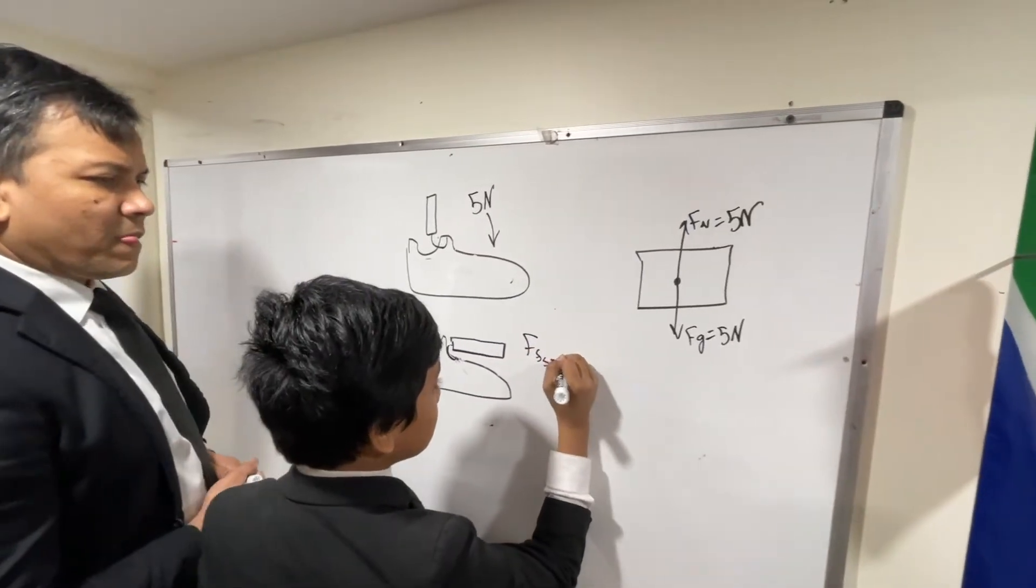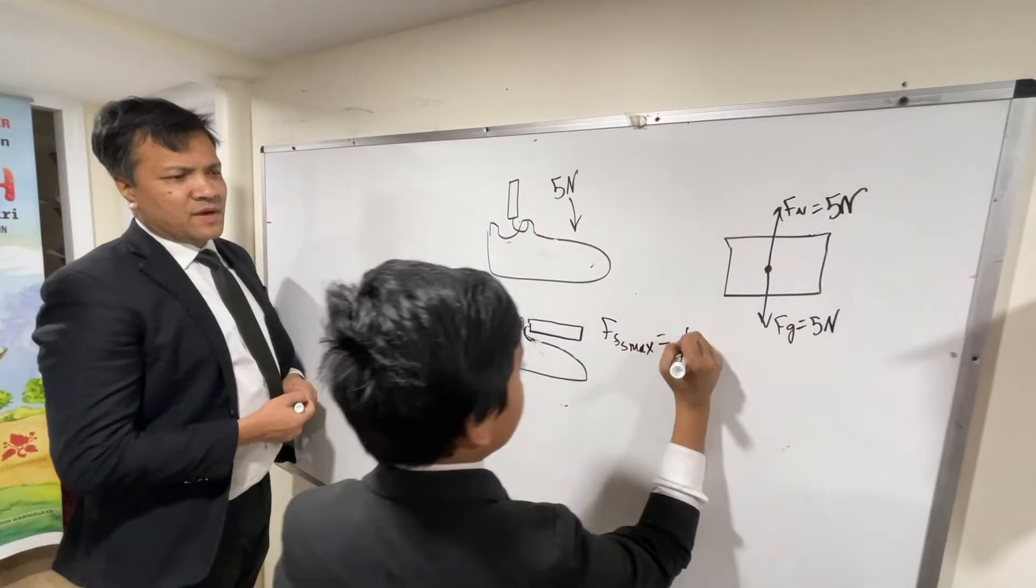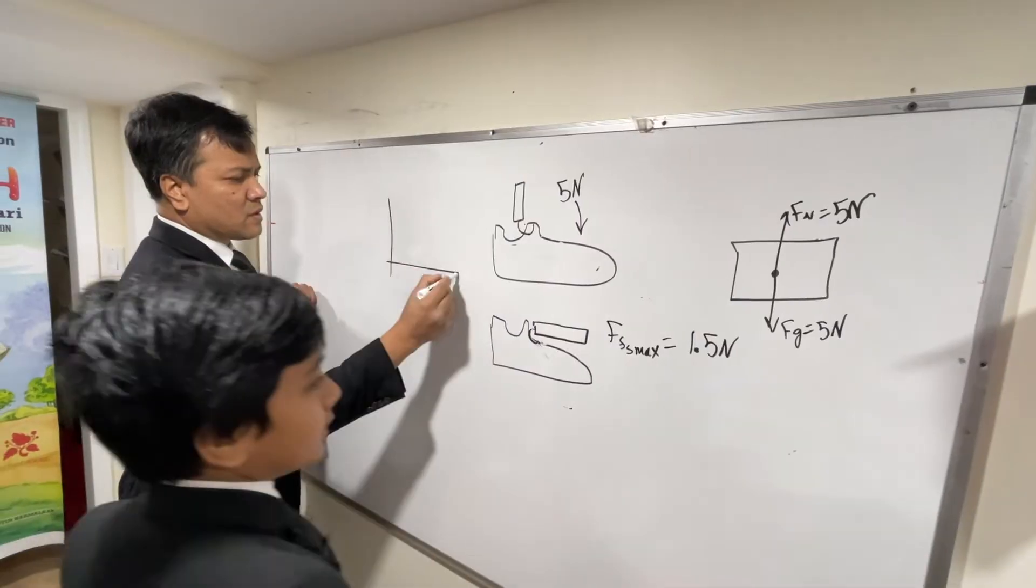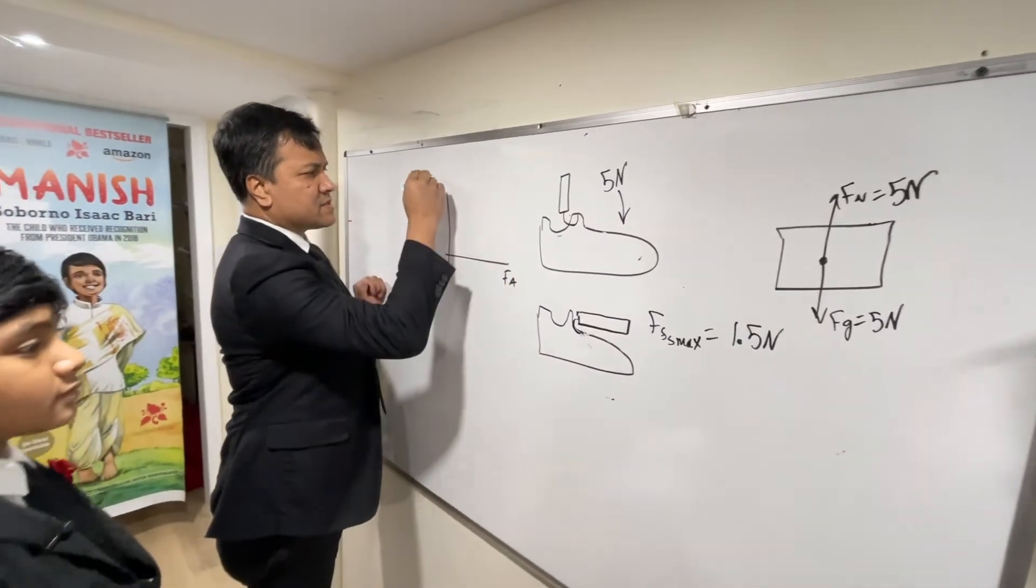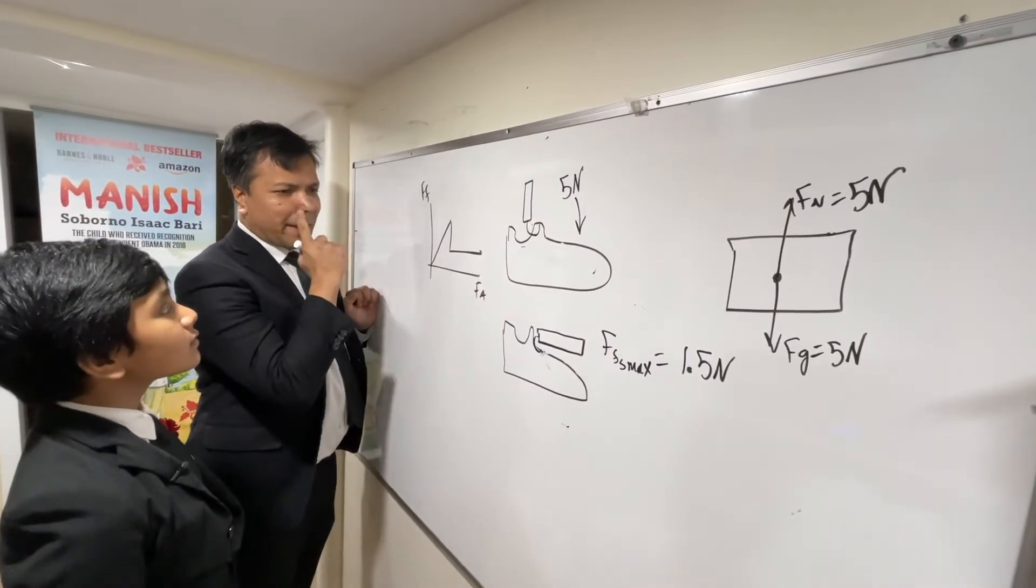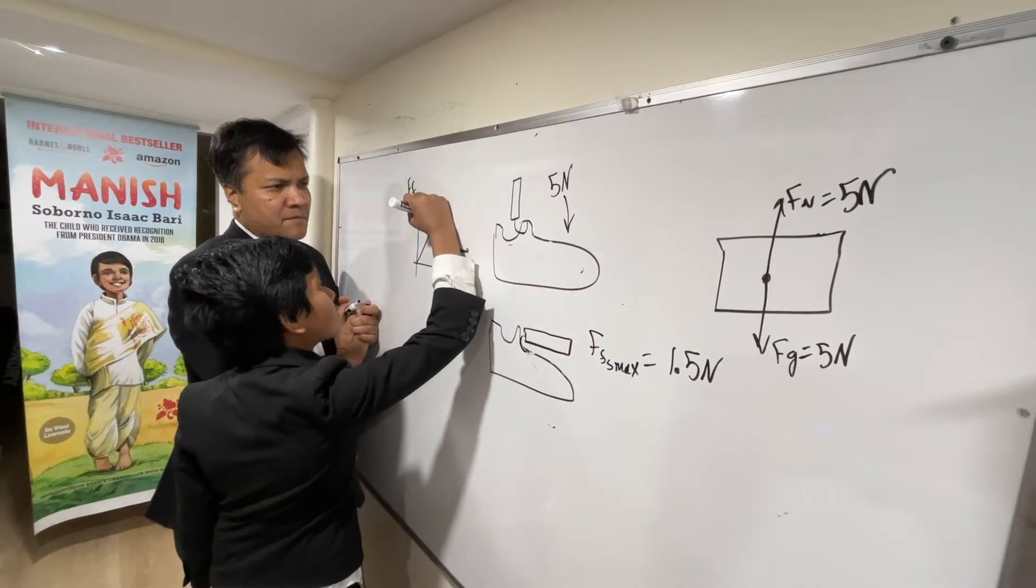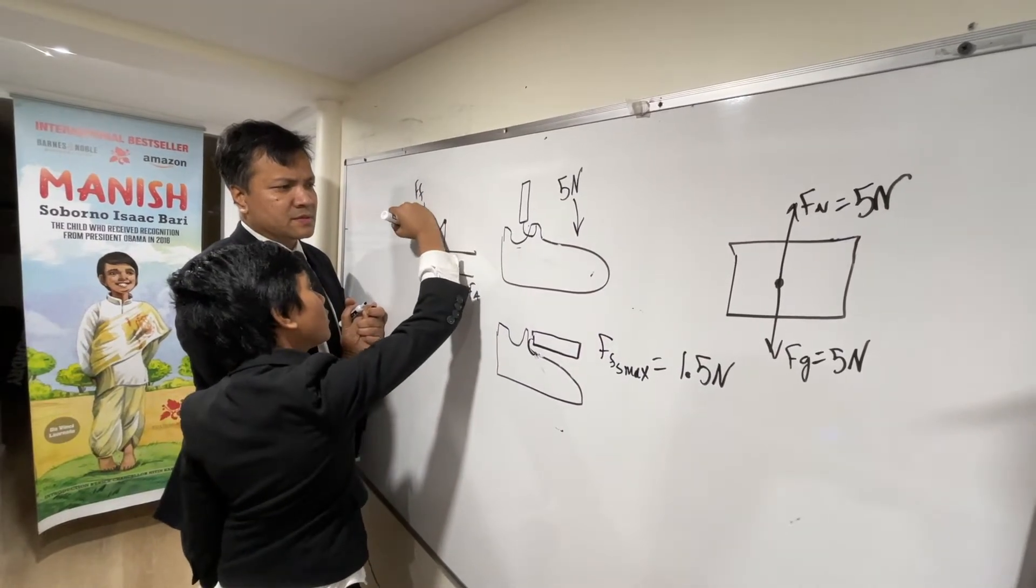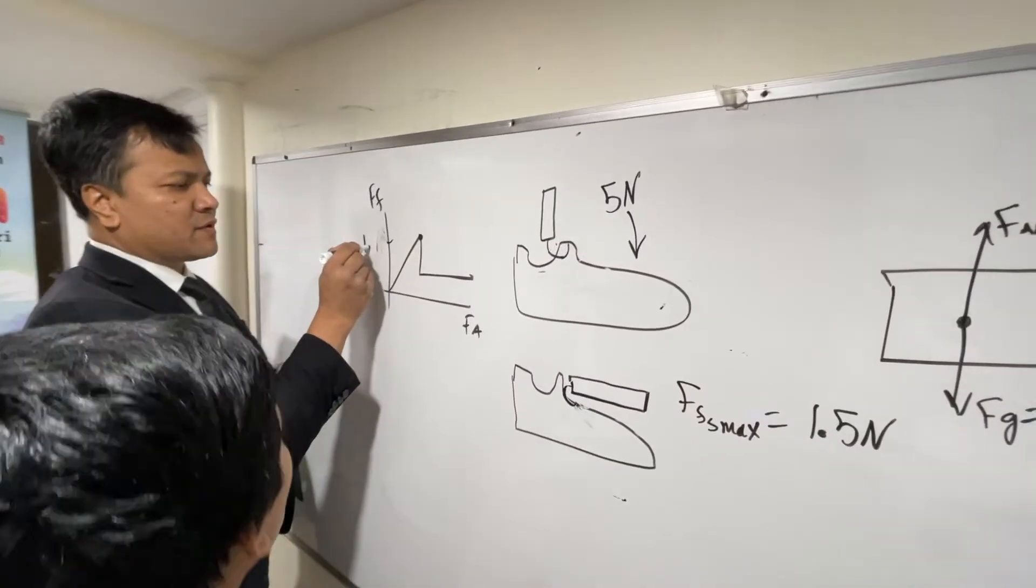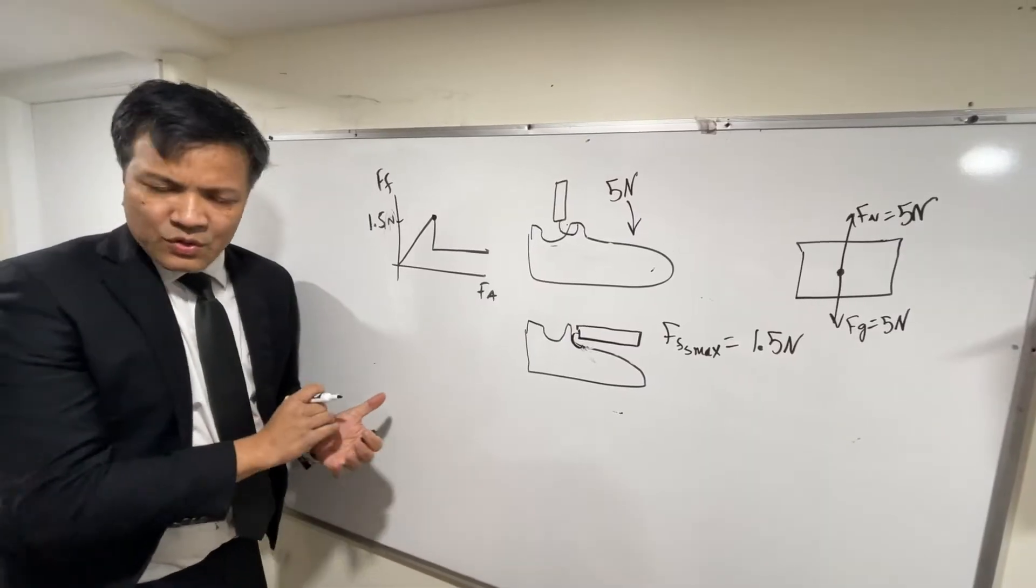Okay, so one point five Newtons was the maximum static friction. Yeah, because that's the max force that we needed to apply, right? One point five, that's maximum. Alright, now come over here Shubonda. Yeah. This is Fa, this is of course Ff. And exactly where do you need to write 1.5 Newtons? 1.5 is right over here. Alright.